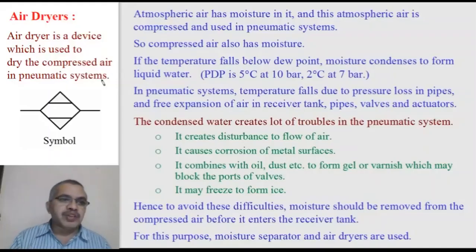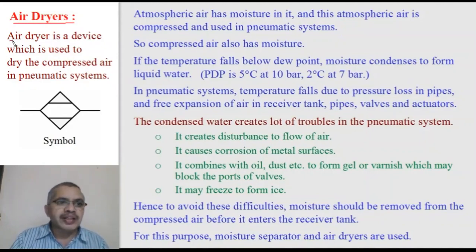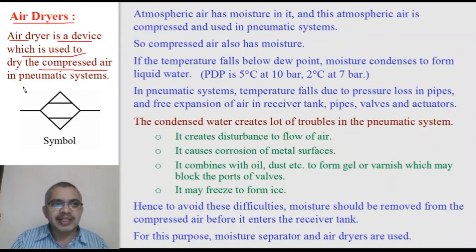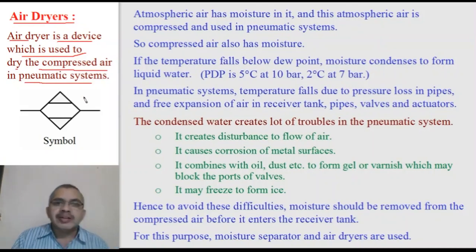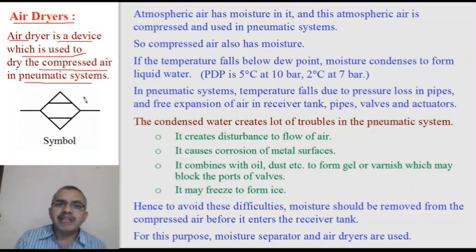Today's topic is air dryers — what is an air dryer, its symbol, and why we need it. An air dryer is a device used to dry the compressed air in a pneumatic system. We use compressed air in pneumatic systems, and that air is compressed by the compressor. The compressor draws air from the atmosphere, compresses it, and delivers it to the pneumatic system.